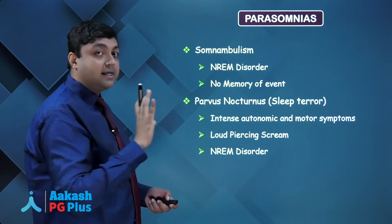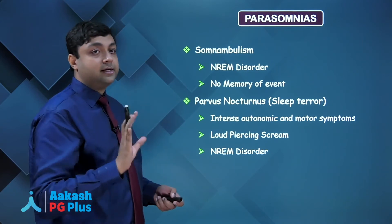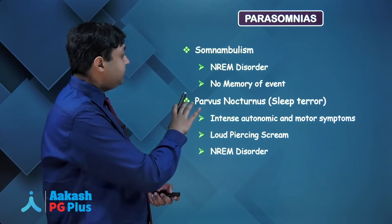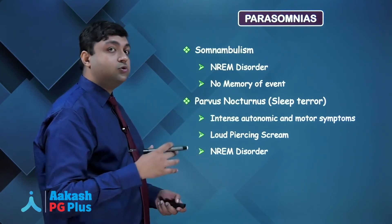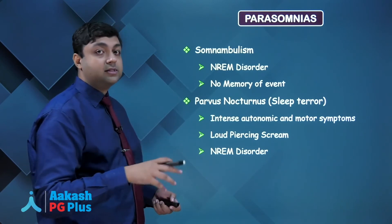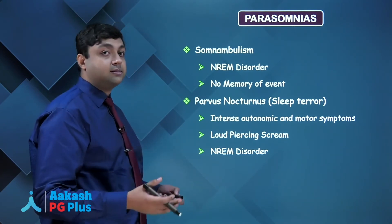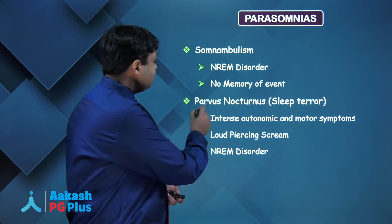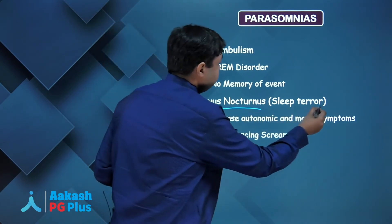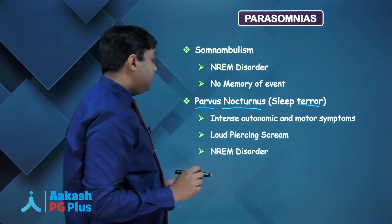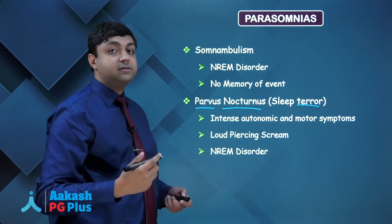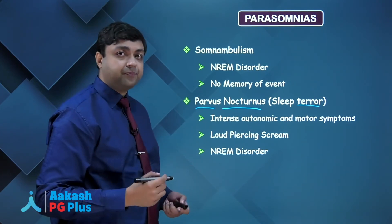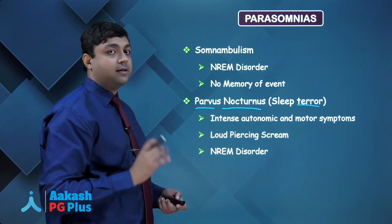Parasomnias can be disorders of REM sleep or NREM sleep. Somnambulism is a disorder of NREM sleep in which the person has no memory of the event — they wake up, walk around, show complex motor activity, and there can even be violent acts, but the person usually does not retain consciousness. Then there is pavor nocturnus — sleep terrors or night terrors — intense autonomic and motor symptoms during NREM sleep where a person wakes up with a loud piercing scream and has difficulty going back to sleep.